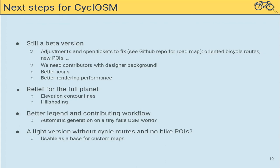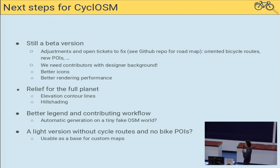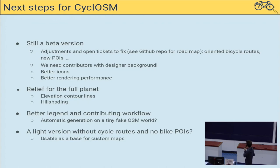We also need quite a few contributions on design — be it icons, style, or color palette — so we are taking contributions on this. Very soon we plan to have relief for the full planet; the online version shown today does not yet have this data. We also plan to work on the map key to ease the contributing workflow, with the idea of generating the key automatically from a tiny fake OSM world to ensure the displayed key is always in sync with the render code. We also plan a light version with reduced POIs and without cycle routes, usable as a base map for custom maps or for print.